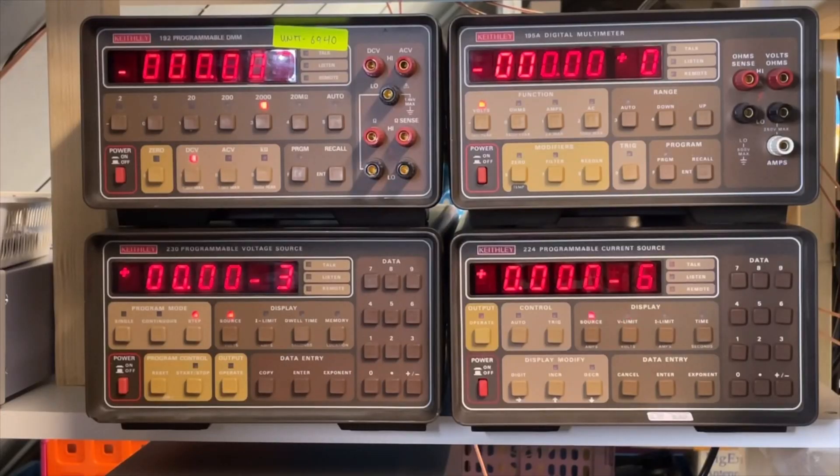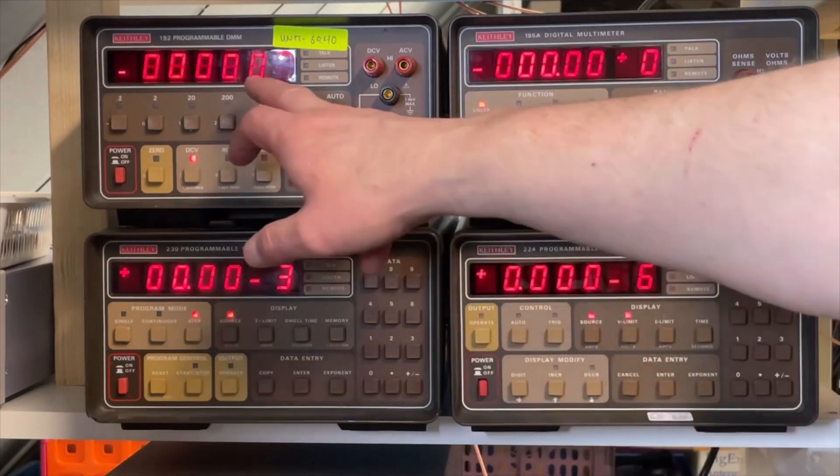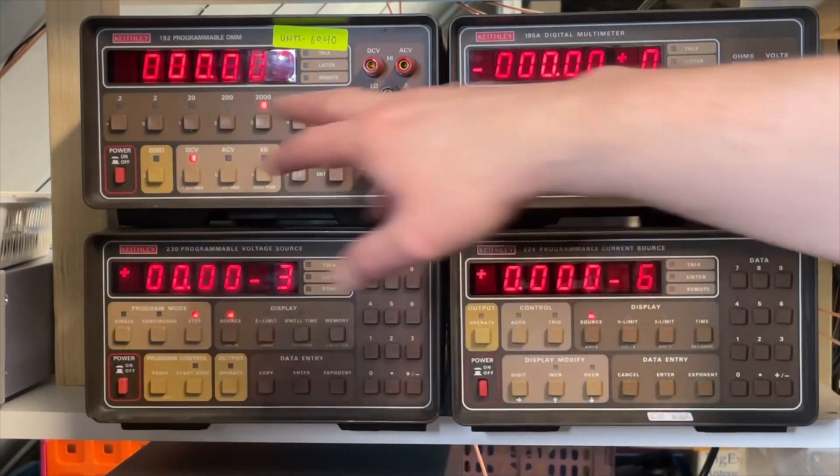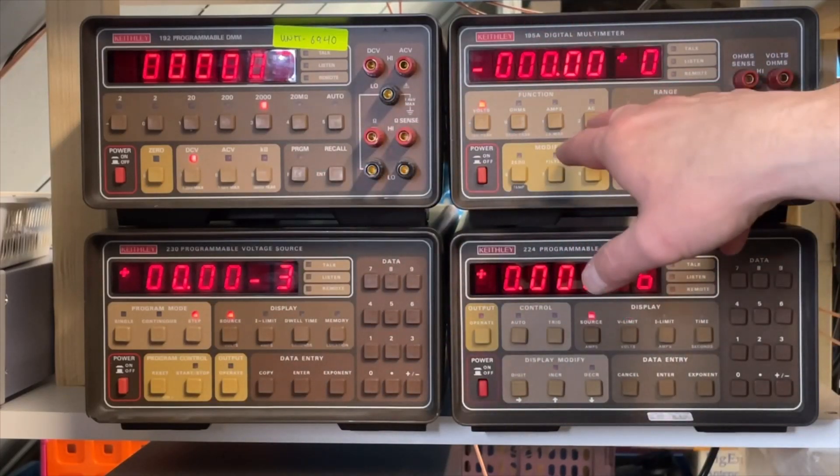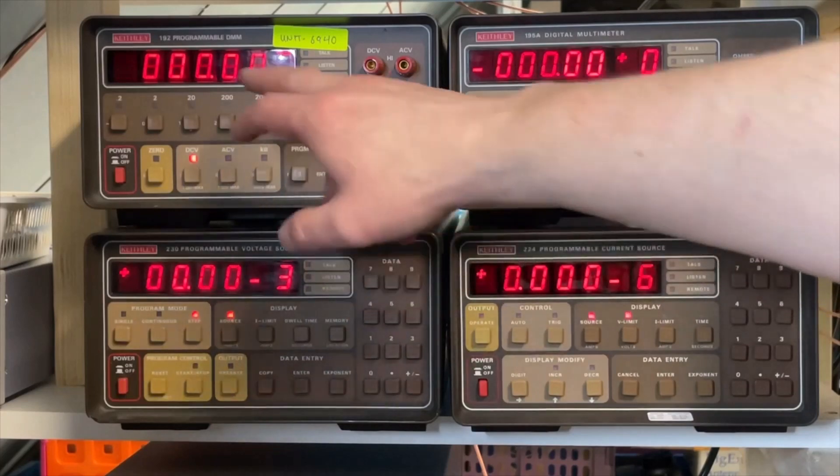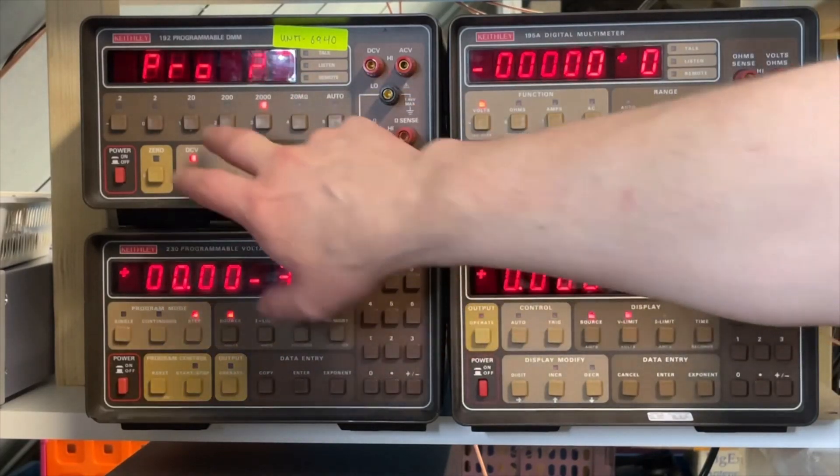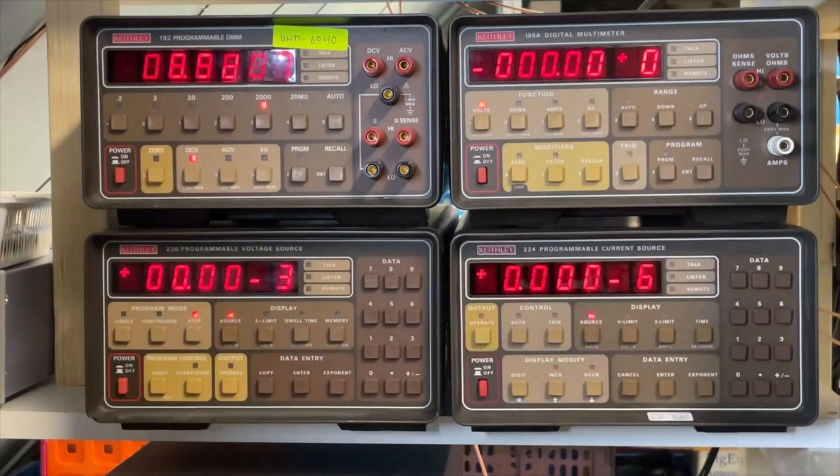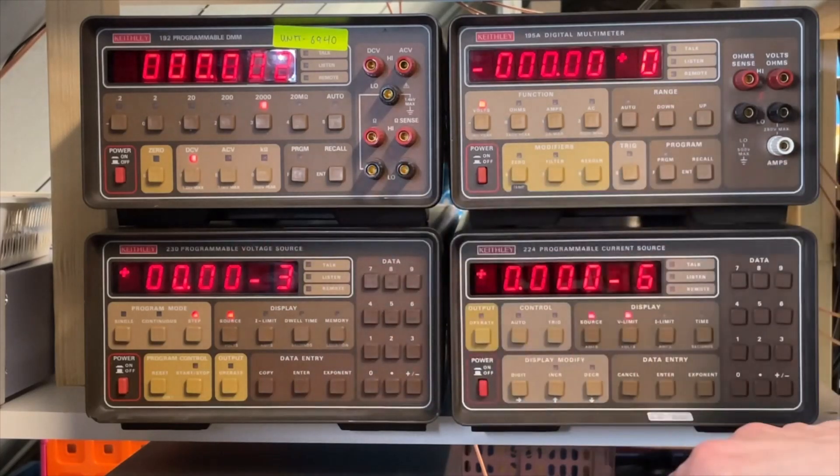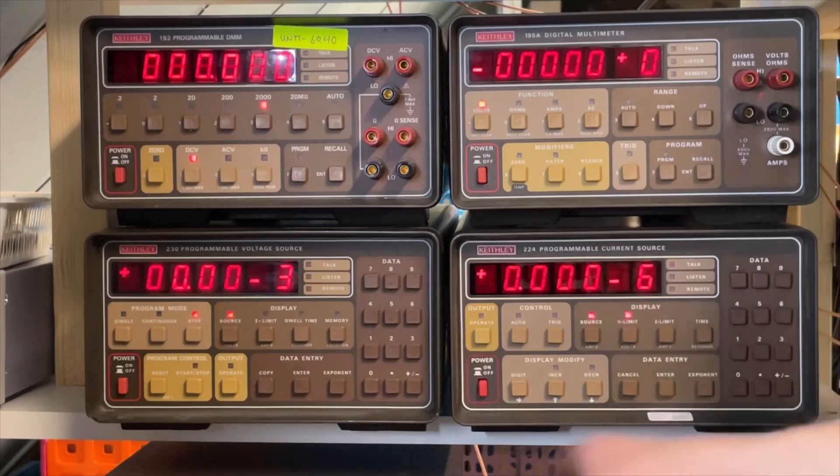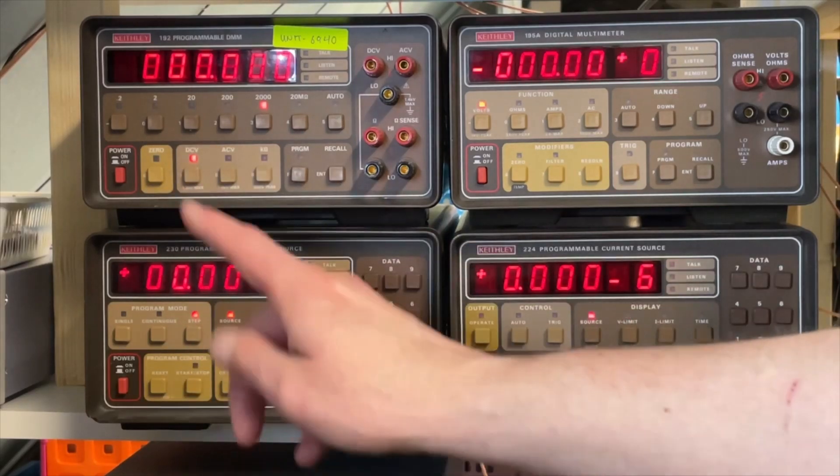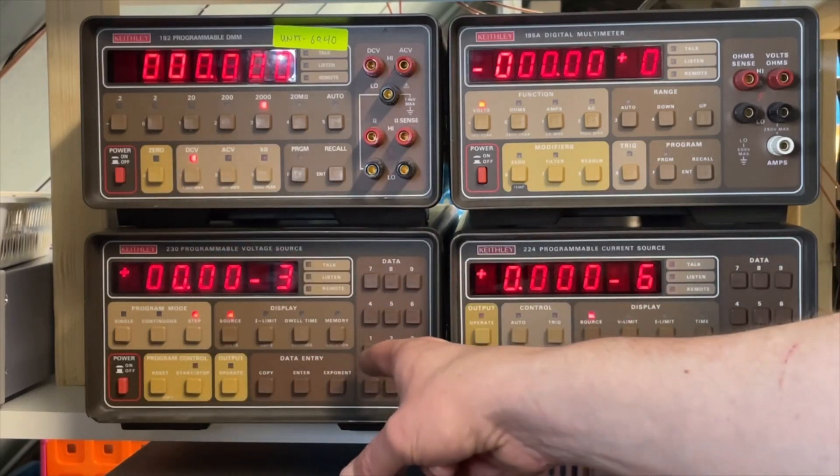Let's have a closer look. So I have here my Keithley collection. It is 192, 195 both DMMs. This is the 5.5 and I think this one is even a 6.5. You can switch it over and add the extra digits. This is my current source I showed a few videos before and this is the voltage source and we are going to play a little bit with this one today.